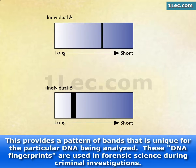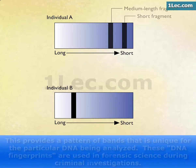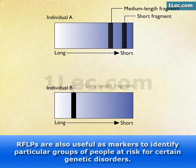These DNA fingerprints are used in forensic science during criminal investigations. RFLPs are also useful as markers to identify particular groups of people at risk for certain genetic disorders.